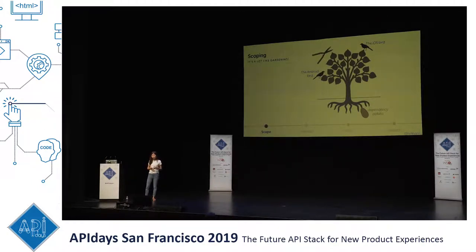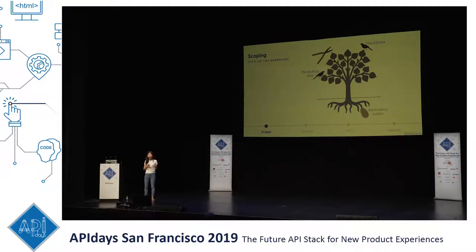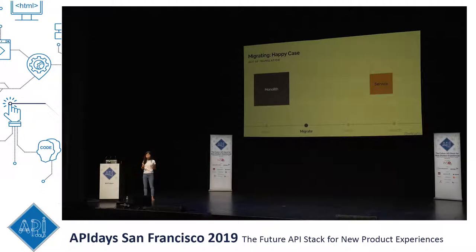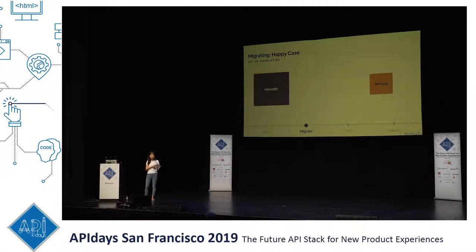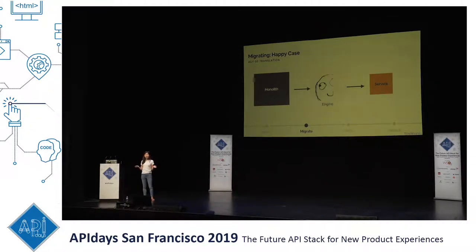After we have determined what we want to migrate, it's time to actually migrate. The goal of our migration is to achieve feature parity with our existing monolithic application, which means we just want to migrate our existing logic as-is without adding any new product features into the mix — we want to take one step at a time. So let's start with the happy case. Assuming we have all the downstream dependencies extracted out of the monorail and set up in the SOA world, all that's left is to migrate our old logic from the monolith, which is built in Ruby, to our new service, which is built in Java. It's the engineers who do the heavy lifting of migration.